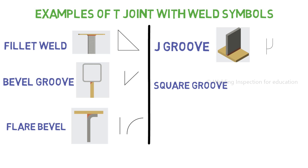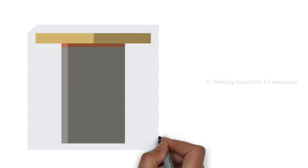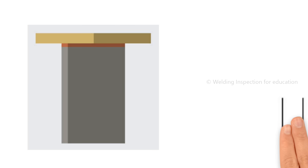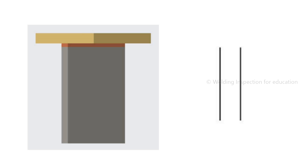Finally, square groove T joint: this is a connection between two flat surfaces at a 90-degree connection, but in this case the two metals are connected without physically touching each other.